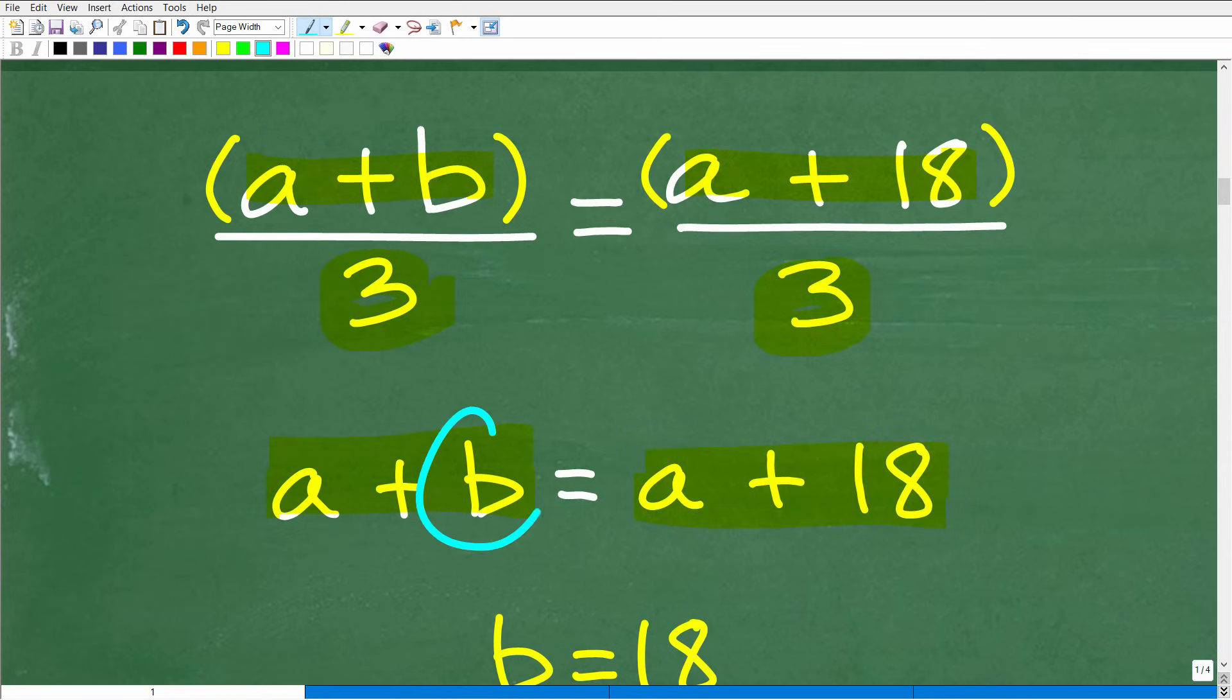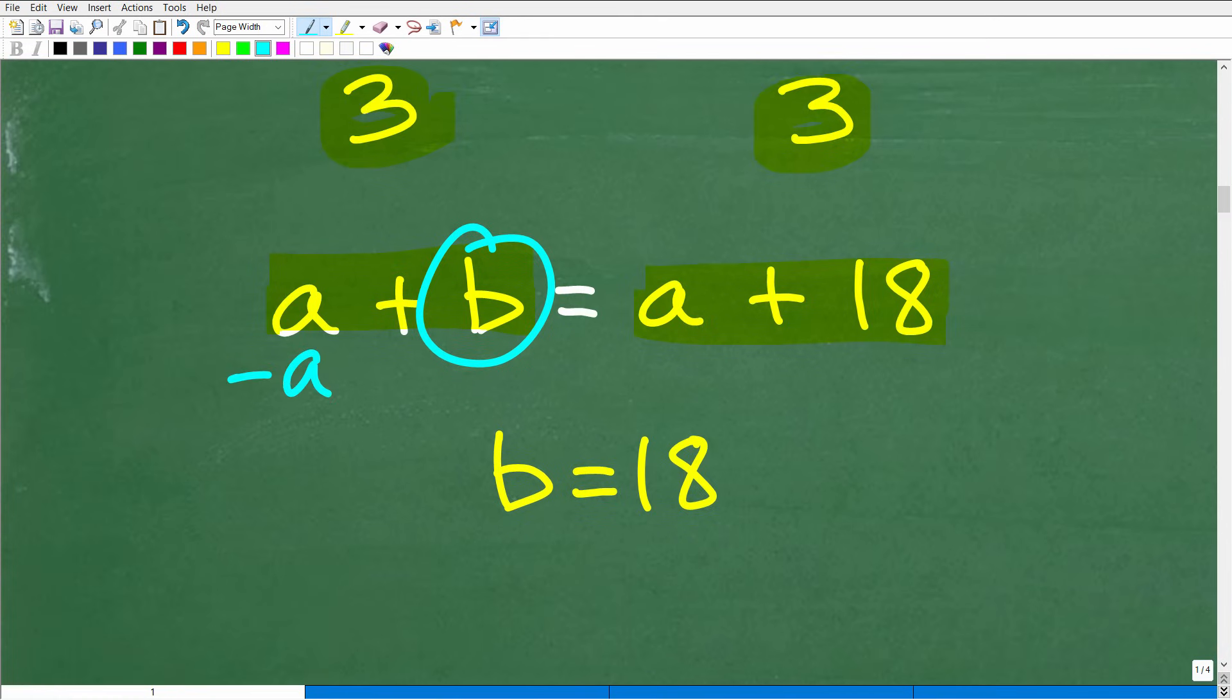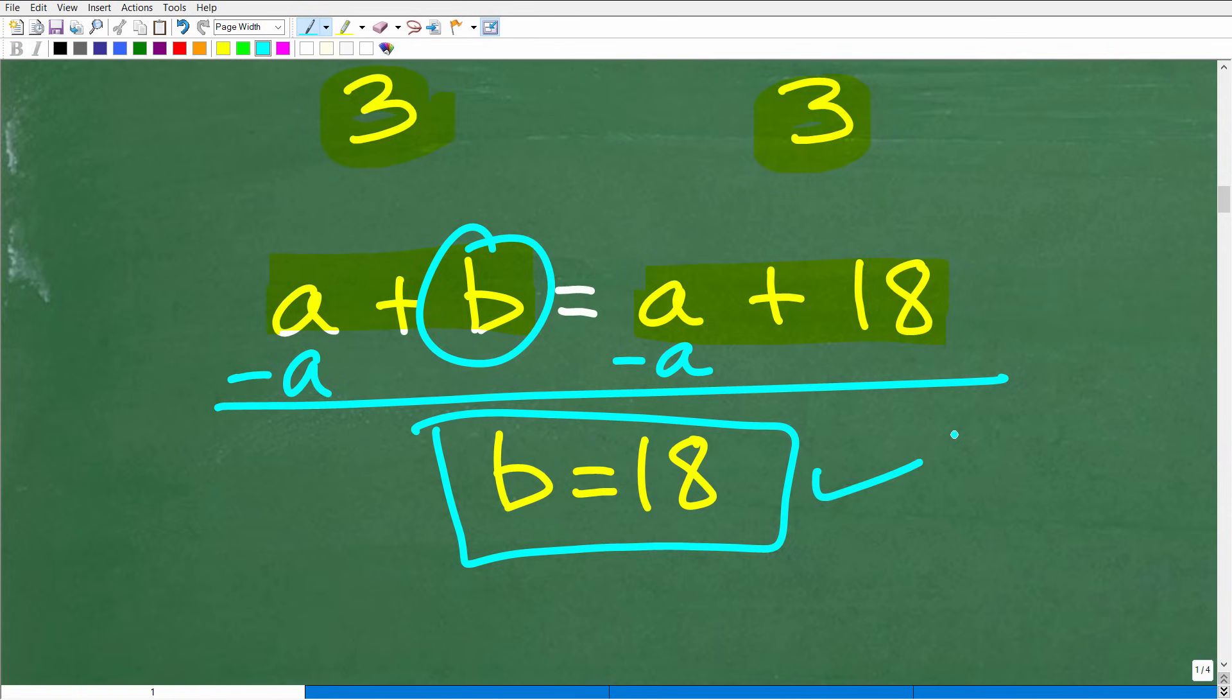Okay, so as we talked about, we have two fractions here. We have the same denominators. This fraction is equal to this fraction, so the numerators must be the same. So we can simply just equate the numerators. So a plus b is equal to a plus 18. And again, we're looking to solve for b. All right, so this is going to be super easy here. I'm just going to go ahead and subtract a from both sides of the equation, and I'm going to get b is equal to 18. All right, that's a very good approach, straightforward.